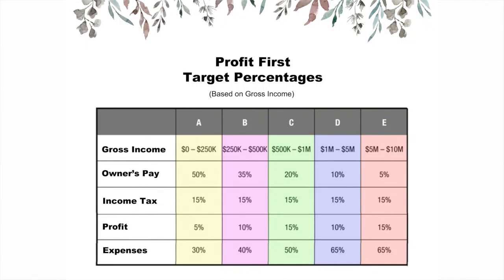These percentages are based on businesses that gross $250,000 or less. Profit First has a chart showing their recommended target percentages by revenue tier. For the $0–$250K range, those are the percentages they recommend. If you're making a million or two million dollars, the percentages differ — at that scale you likely won't take 50% as your paycheck, and you'll have higher expenses with more overhead and employees.